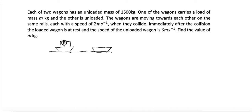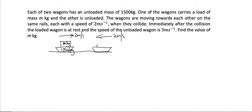That's the m kg load, and the wagons are moving towards each other on the same rail, each at a speed of two meters per second. So both are moving at two meters per second before the collision. The weight of the wagon itself is 1500 kg.